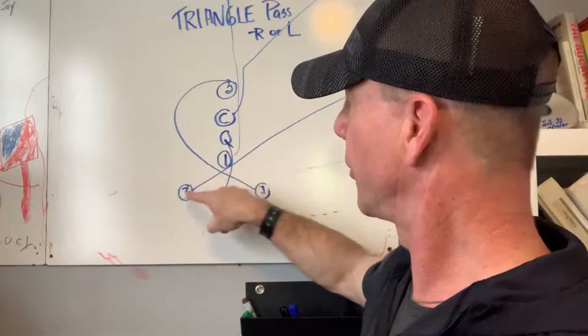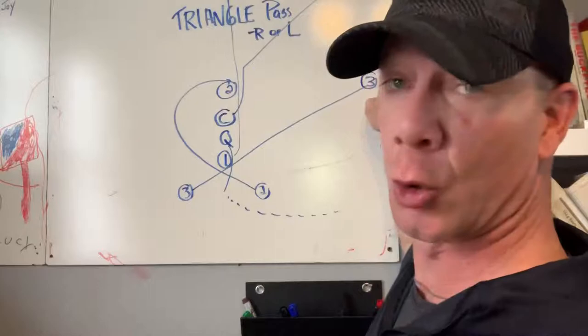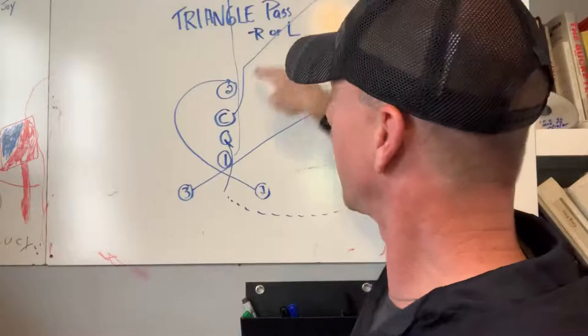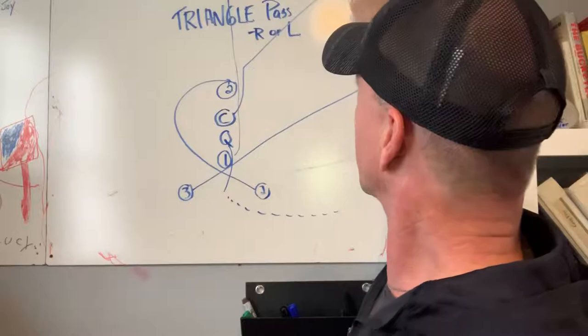Three is waiting for two to clear, making a play fake like you're going to run it, and goes short right. Then center is going to be deep right. So if I call triangle pass right, center's going deep right.